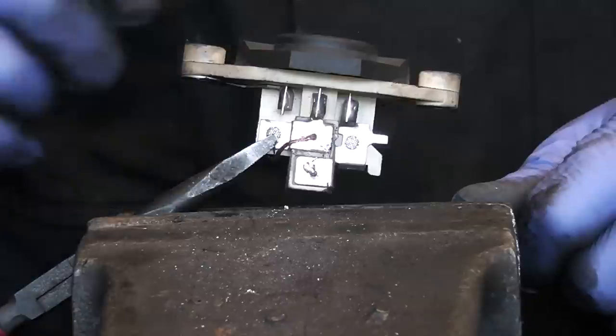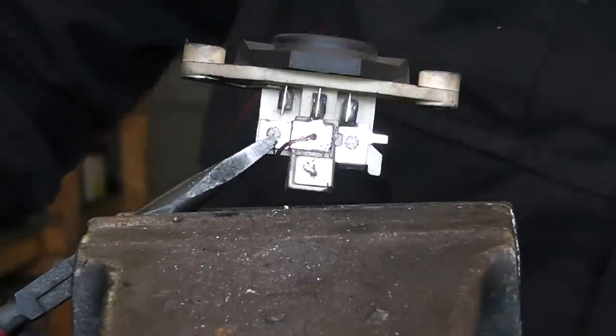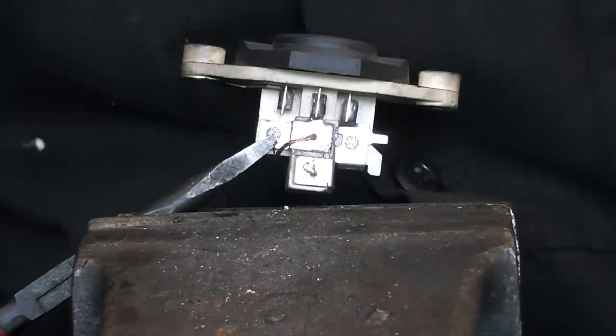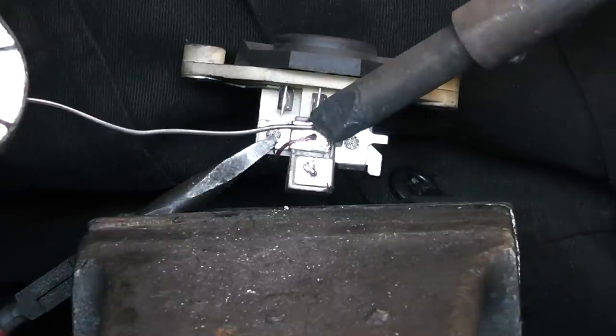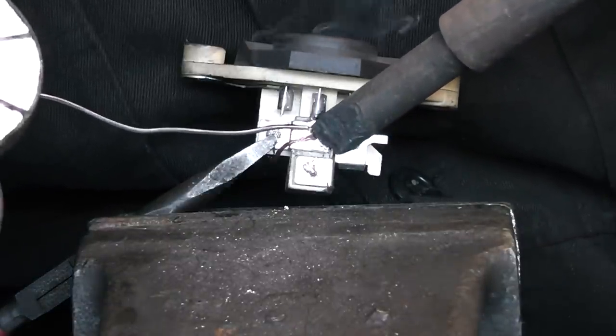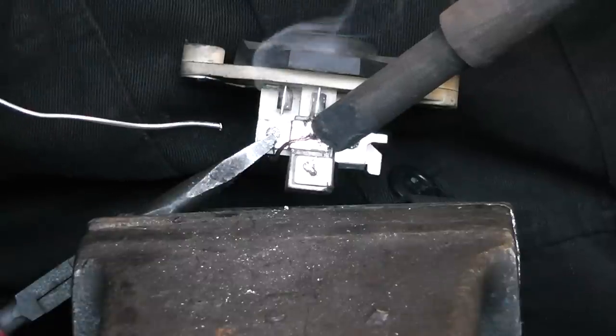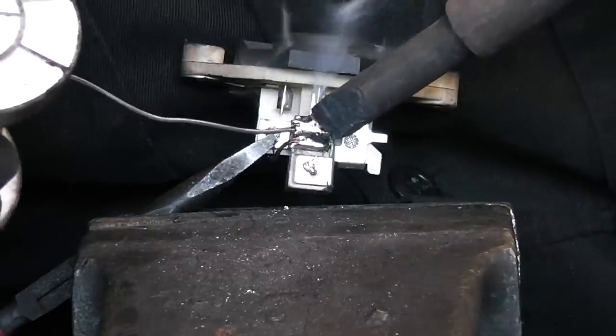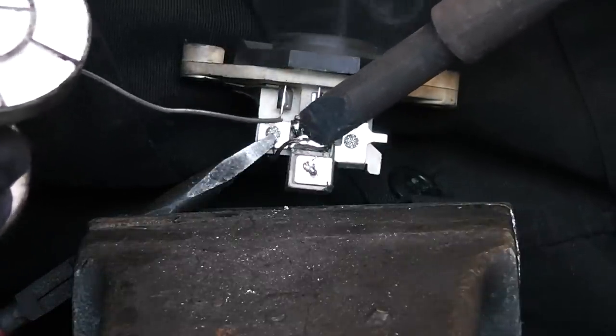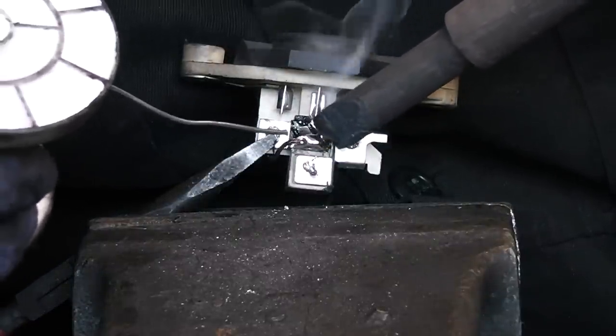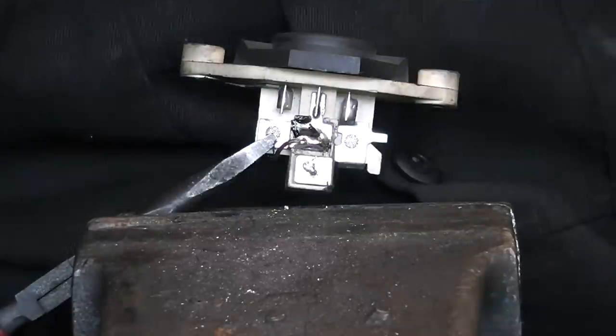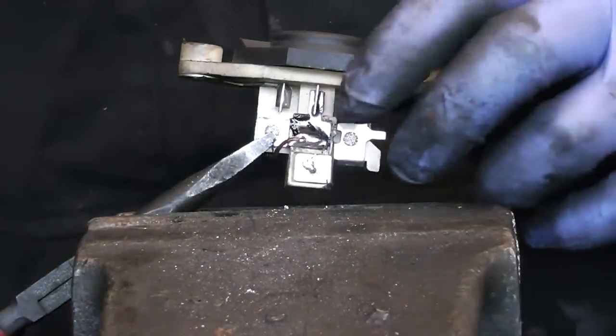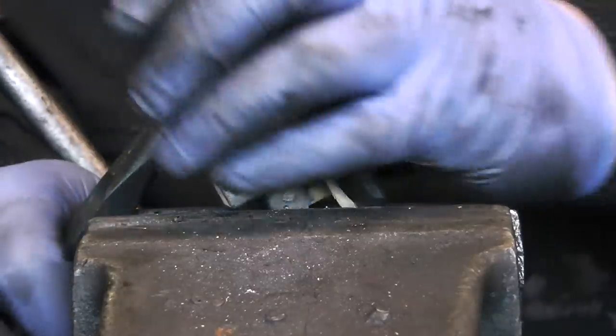Put the pliers in the vise so the regulator won't move. Get yourself your solder and iron. Heat it up slightly just to get the solder moving, and put a drop of solder on it.